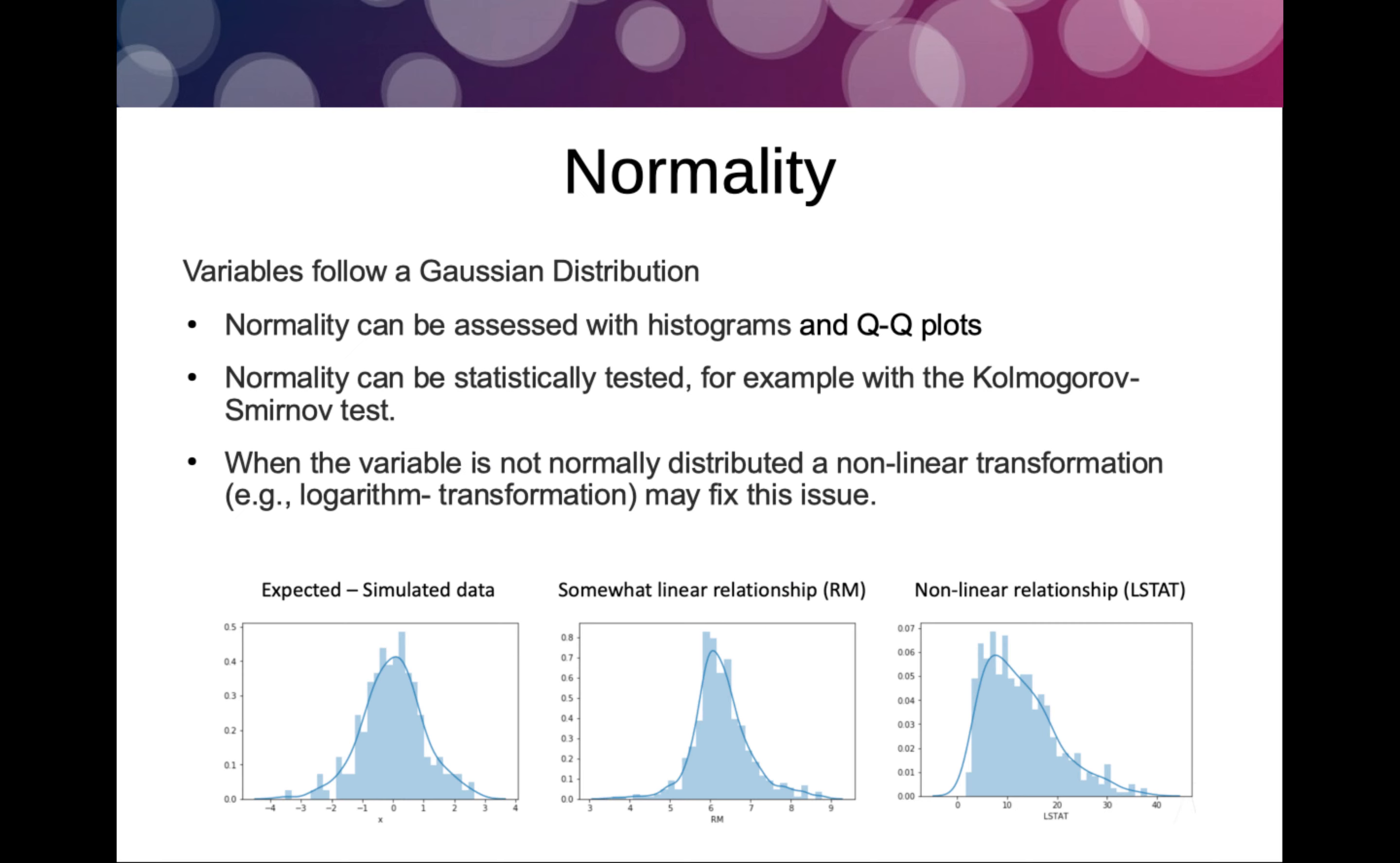Then we come to normality. Normality basically means that the variables or features follow a Gaussian distribution. Normality can be assessed using histograms and Q-Q plots. We'll be seeing in future detailed sections how histograms and normality can be judged, and how it affects our complete dataset, and how we can feature engineer those things.